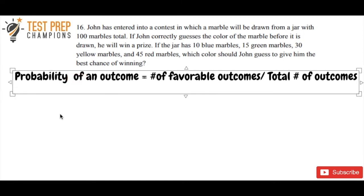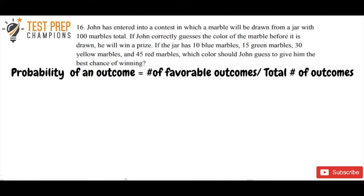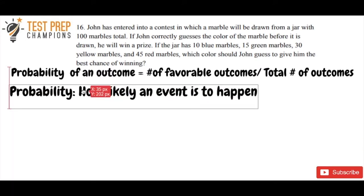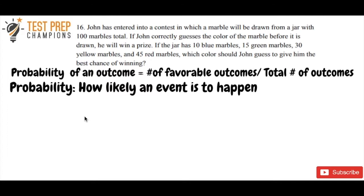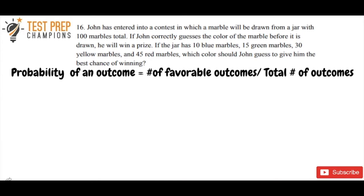This is the formula for probability, and there are different ways to write it. The probability of an outcome equals the number of favorable outcomes divided by the total number of outcomes. Probability is just how likely an event is to happen. If you want to put that down in your notes, pause the video. Hopefully you got that down. I'm going to clear that definition out so we have some room to work on the question.